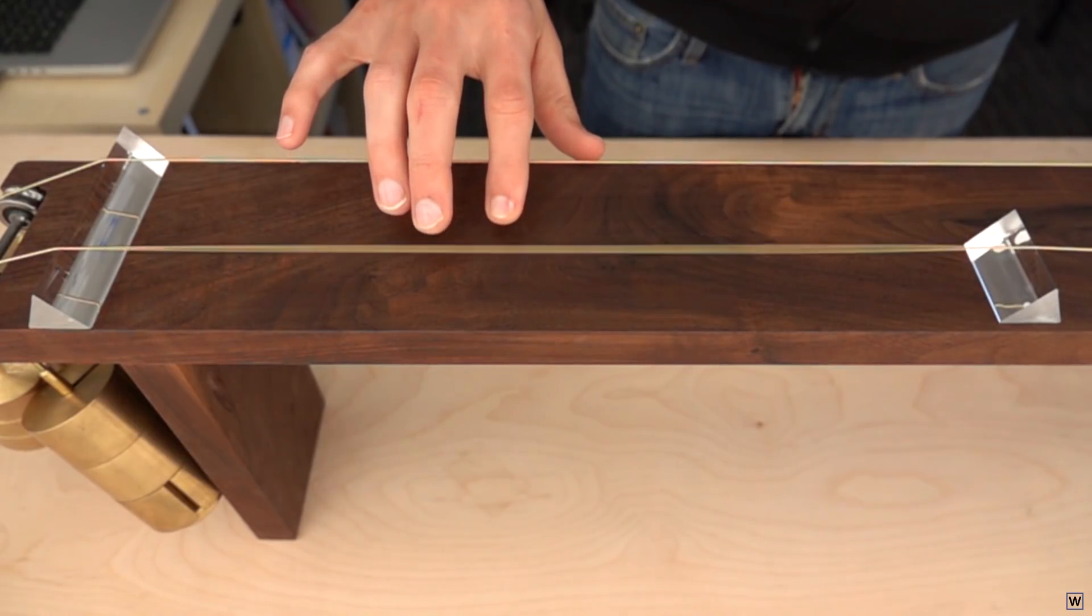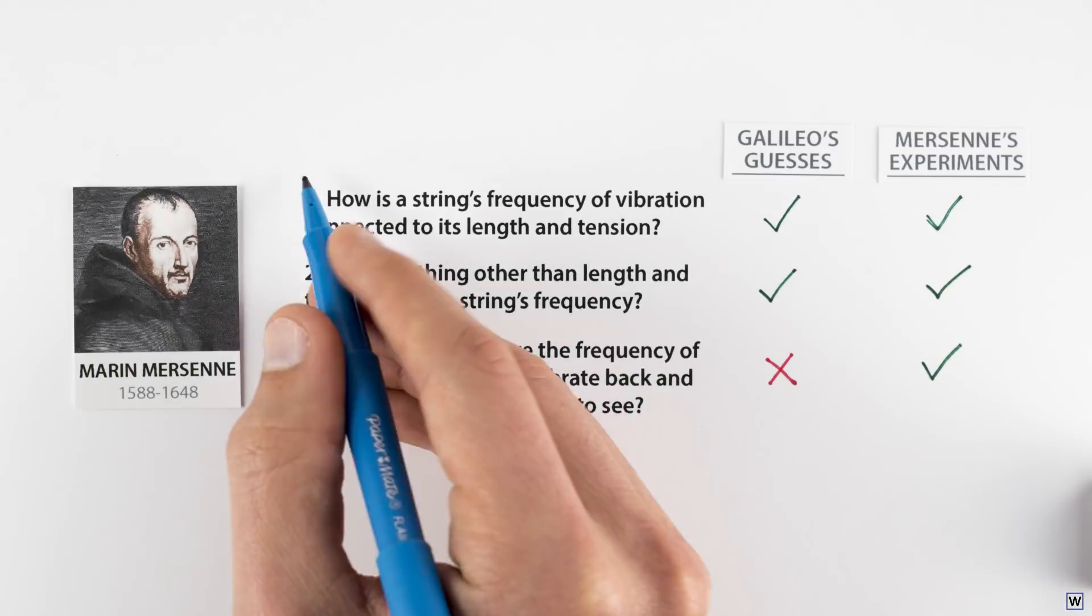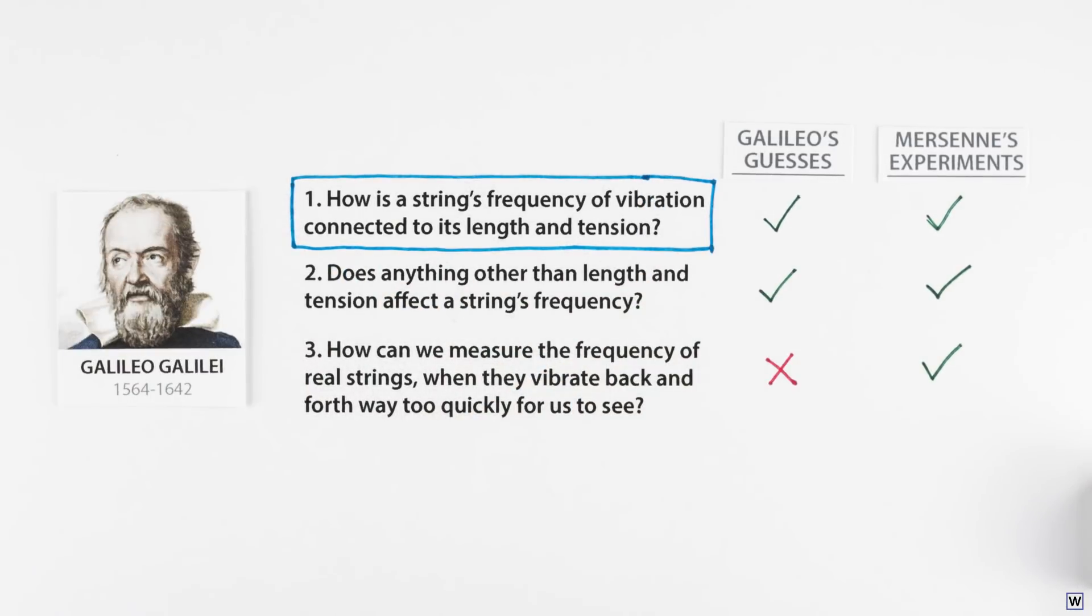Now that we have a good experimental setup, we can do some real science. Let's try to answer one part of the first question that Galileo correctly guessed the answer to: What is the connection between the length and frequency of a vibrating string?